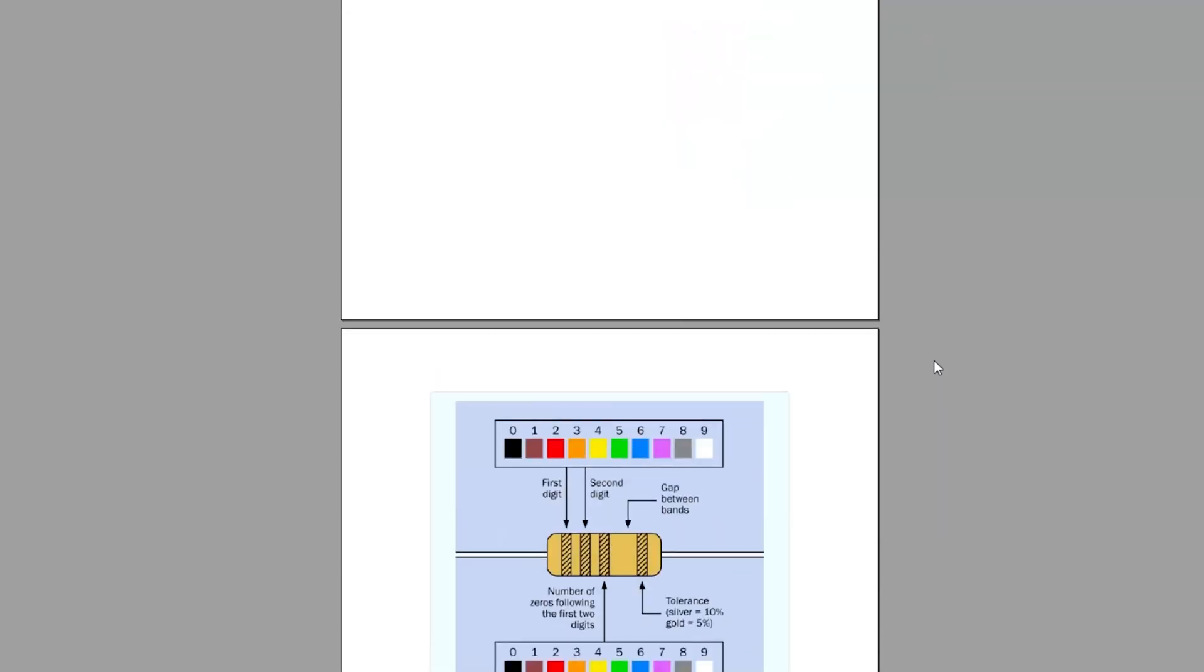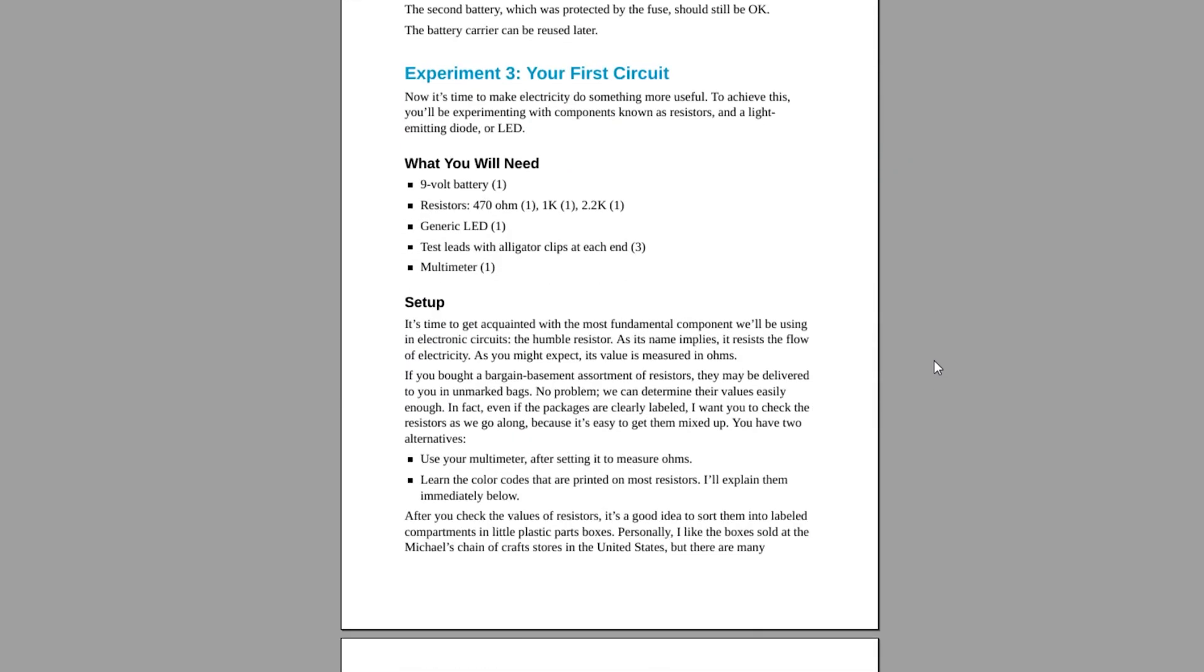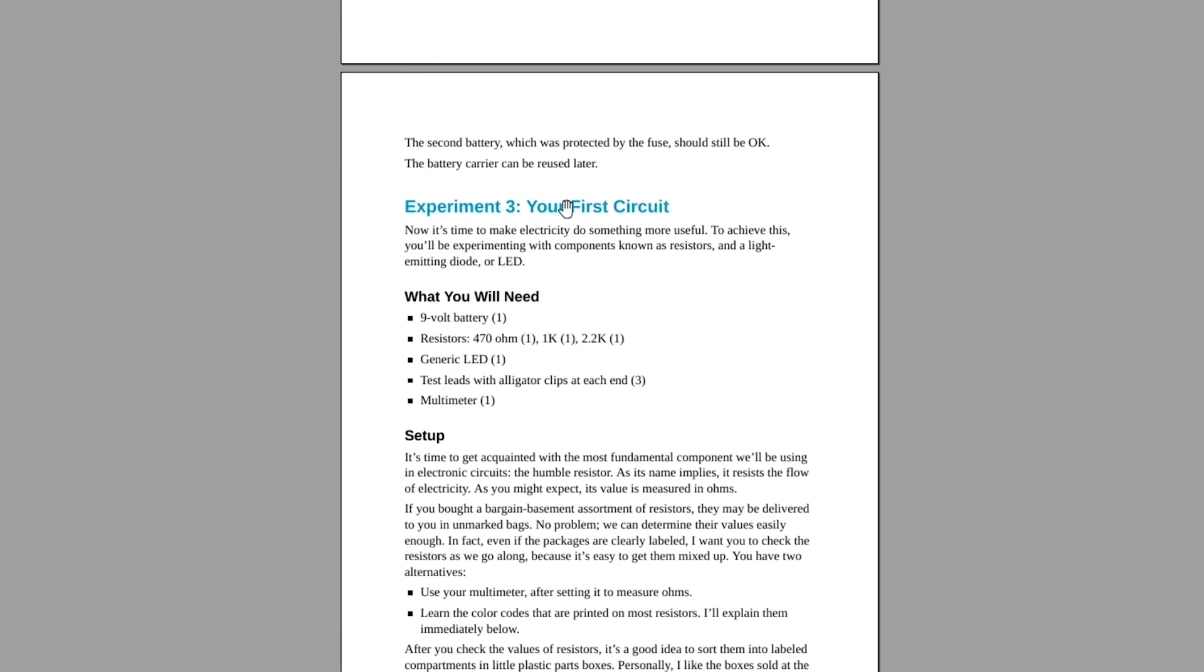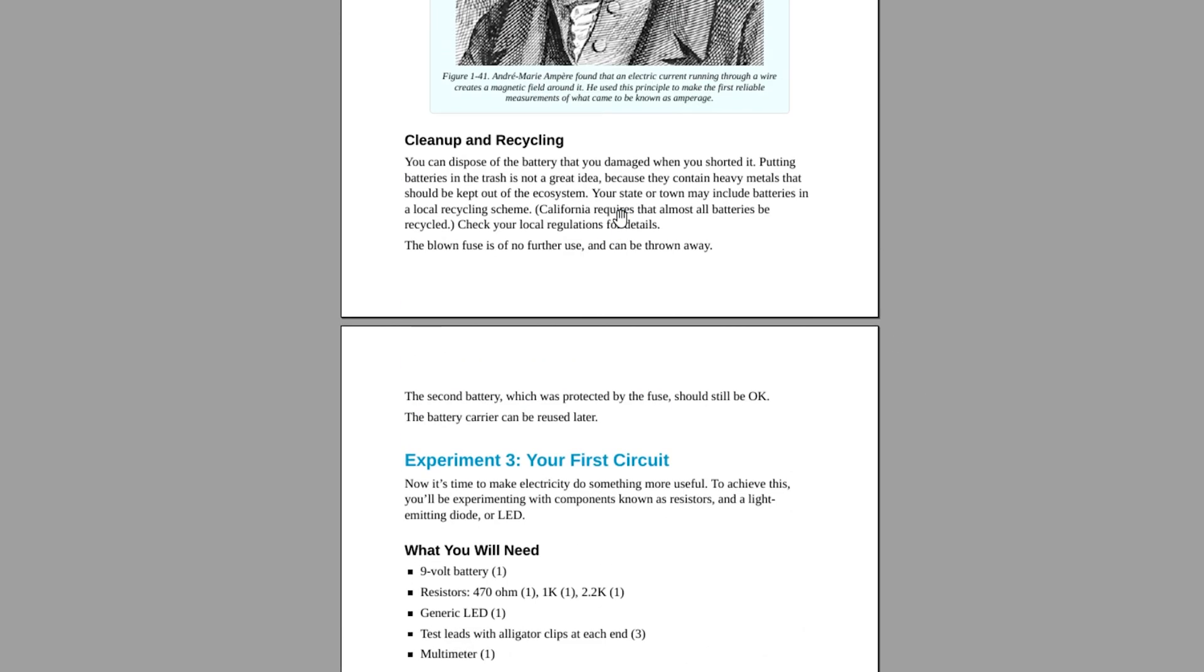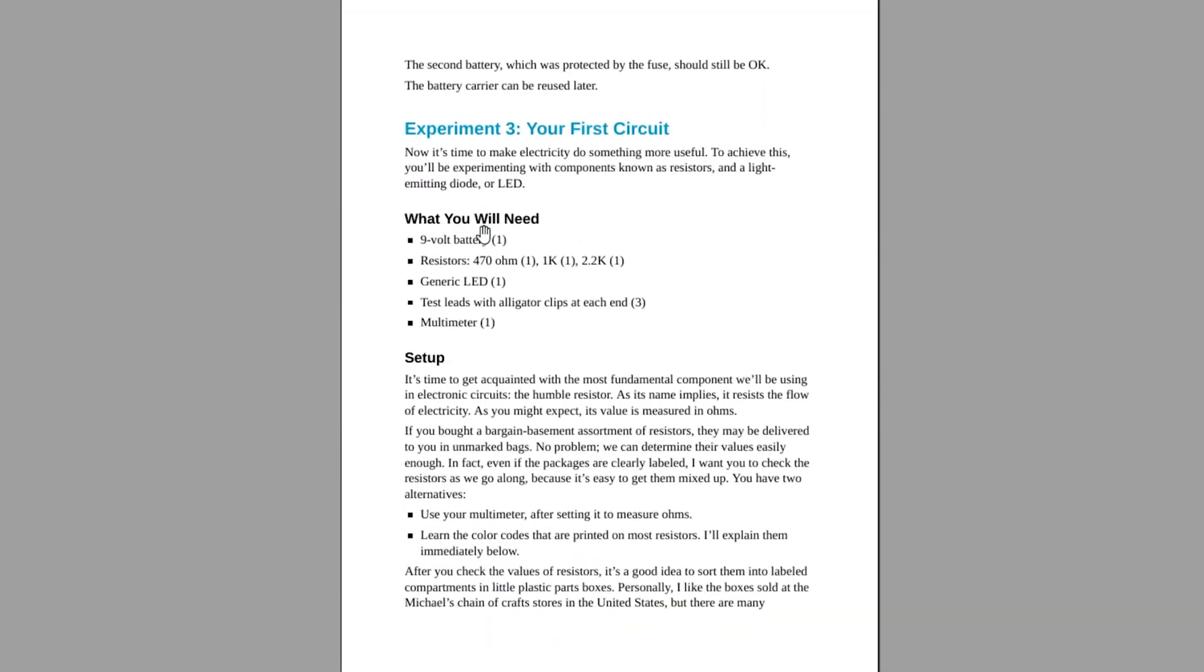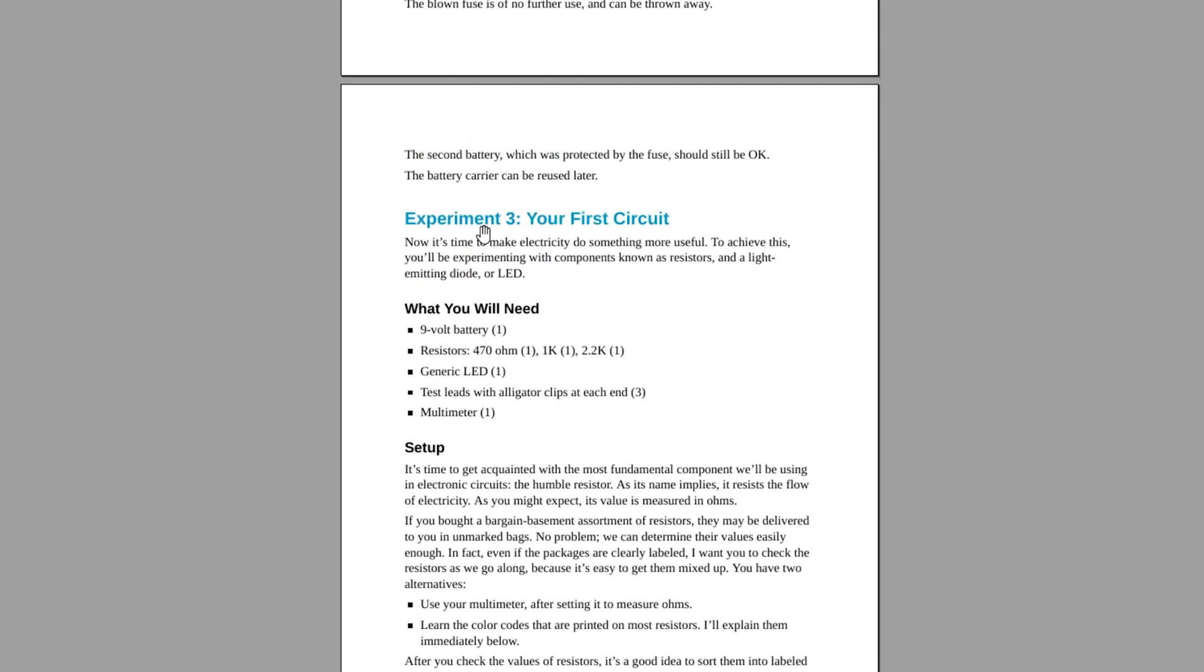So this is the first circuit here. So we're going on to page 57. It's experiment 3, your first circuit. The first two experiments, I think like firstly, he tells you to put a battery in your tongue. Secondly, he tells you to short out a battery. So it's just kind of getting a feel for electronics and stuff.